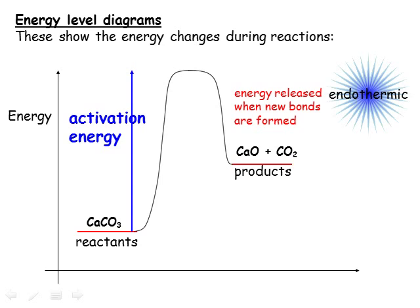We can draw a very similar energy level diagram for an endothermic reaction. The only difference is that the amount of energy we put in will be larger than the energy released when the bonds in the products are formed, and so delta H for the reaction will be positive.